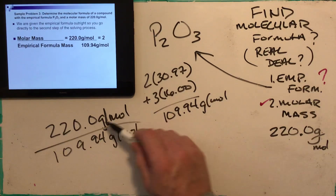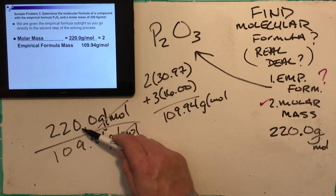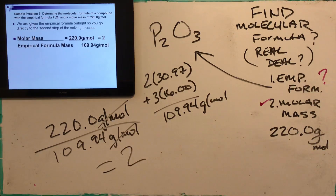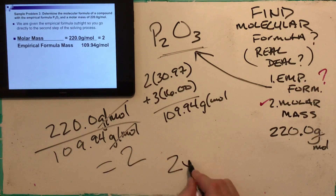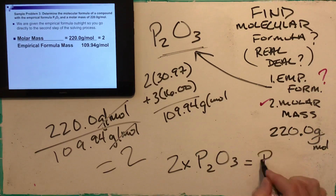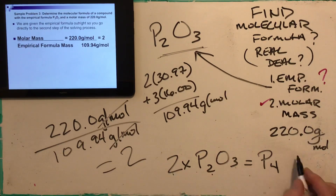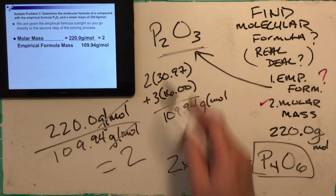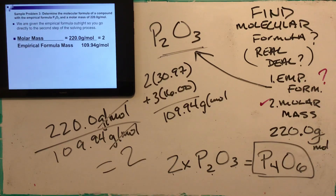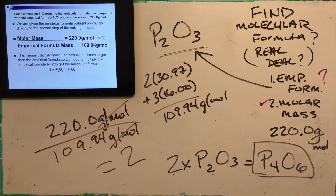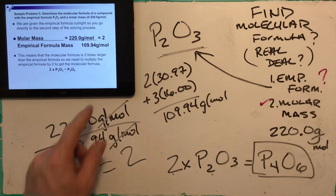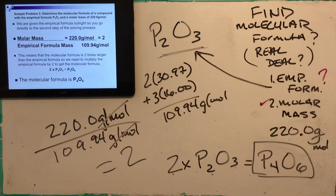I take the molar mass of 220 g/mol and divide by the empirical formula mass. The empirical formula P2O3: two times phosphorus (30.97) plus three times oxygen (16) equals 109.94 g/mol. Dividing 220 by 109.94 gives 2. The real compound is twice the empirical formula. So 2 times P2O3: 2 times 2 gives P4, and 2 times 3 gives O6. My molecular formula is P4O6.